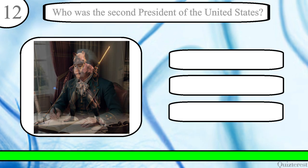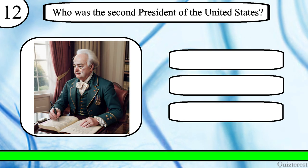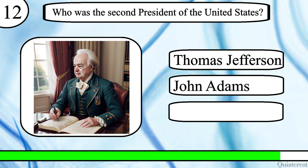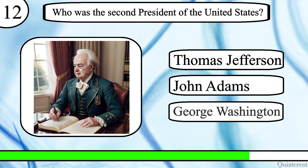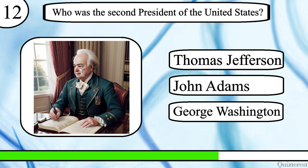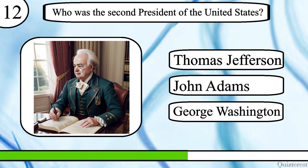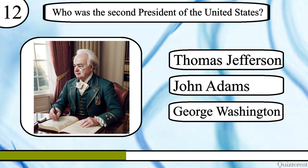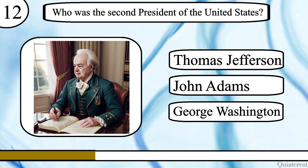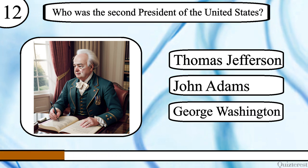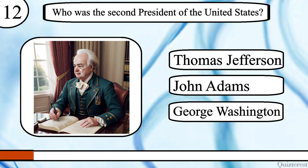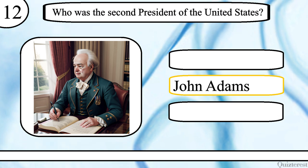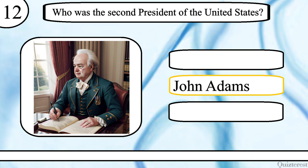Question 12. Who was the second president of the United States? Thomas Jefferson, John Adams or George Washington? The correct answer is John Adams.